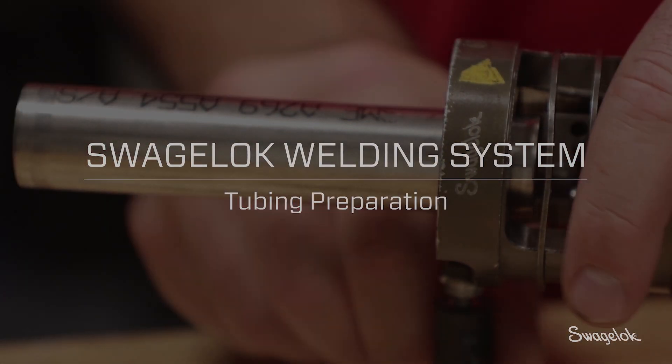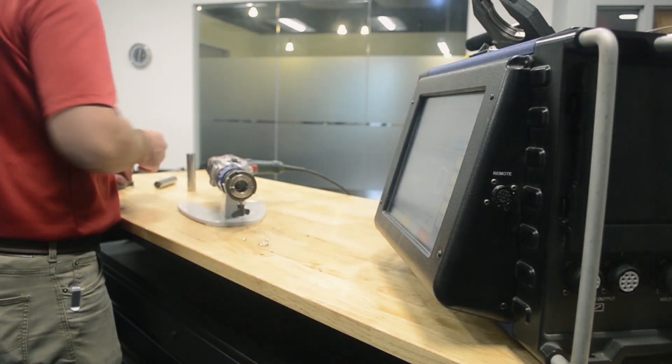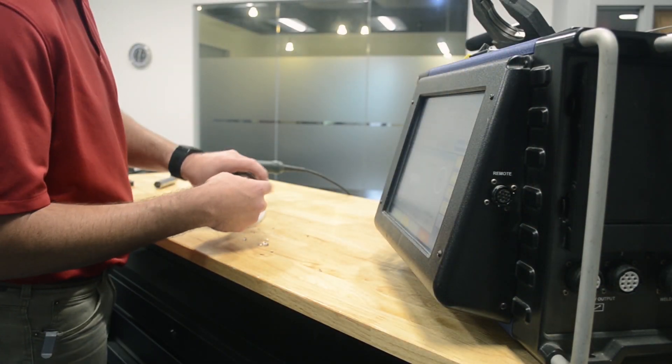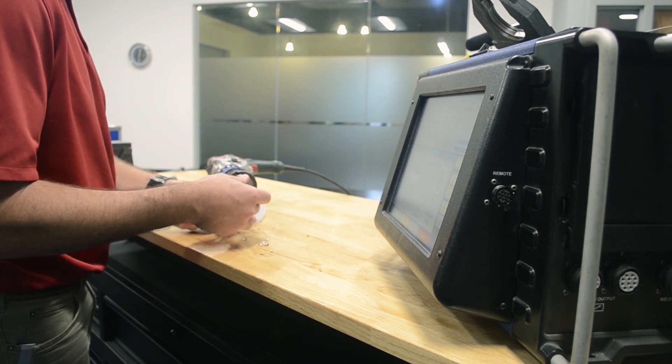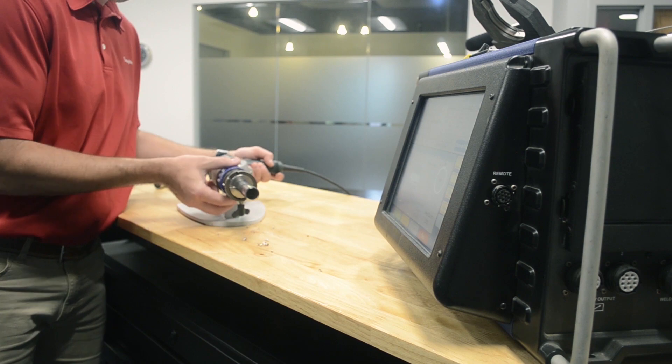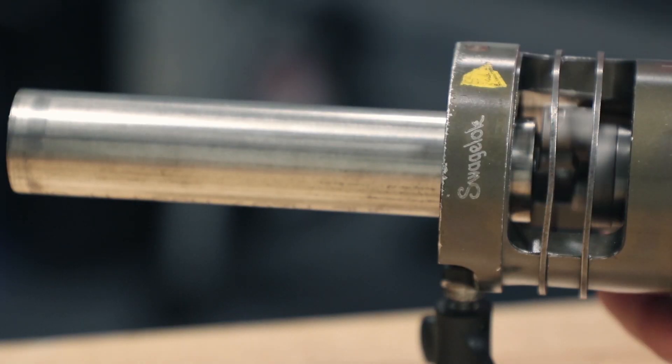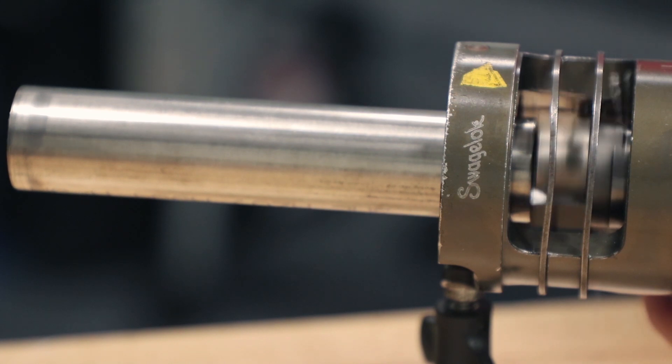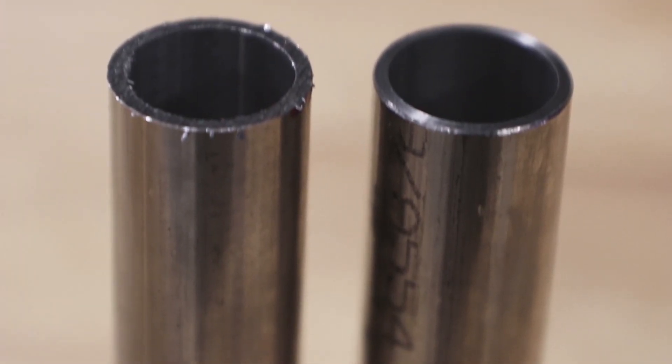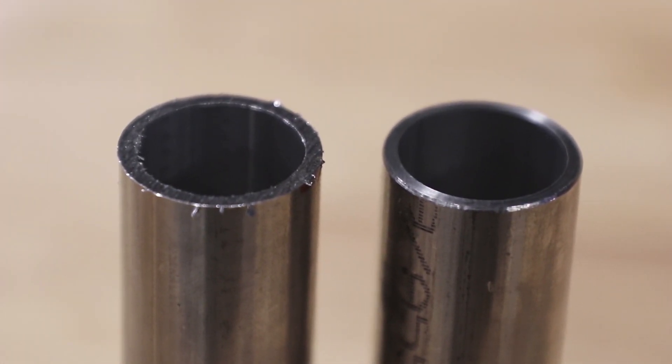We talked about how important the fitment is, the joint between the two pieces of material before you actually do the weld. We've got several pieces of equipment to help accommodate that, one of which is a facing tool. This is a pretty straightforward piece of equipment. It's a drill motor that runs a carbide bit around the end of the tube. We still recommend cutting the tube as square as possible, either using a tube saw or a tube cutter, but this equipment removes all burrs and makes sure the end of the tubing is square, flush, and ready to go.